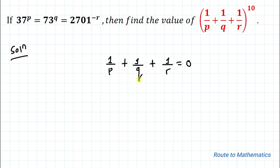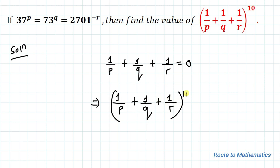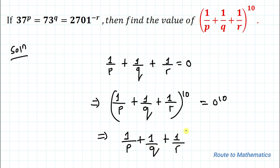We found that 1/p + 1/q + 1/r = 0. Now raising both sides to the 10th power, we have (1/p + 1/q + 1/r)^10 = 0^10, which equals 0. So the answer is 0.